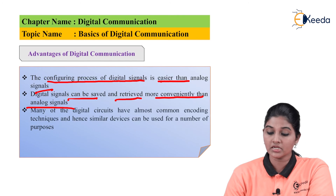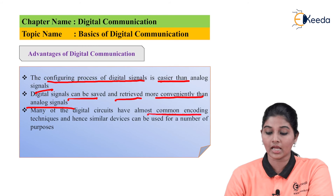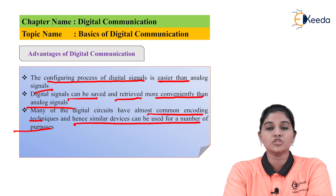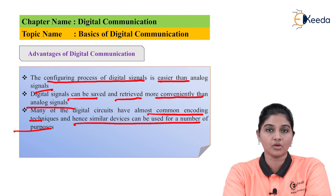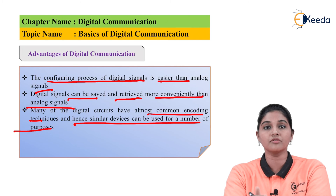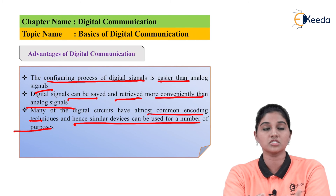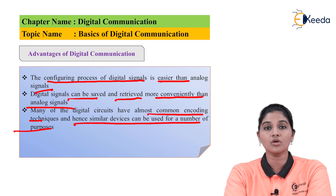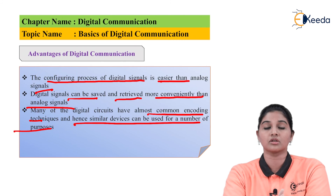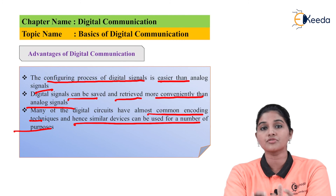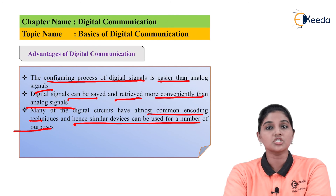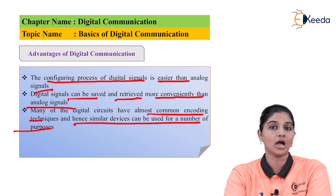Many digital circuits have almost common encoding techniques, and similar devices can be used to perform a number of operations. In contrast, for analog signal transmission, different circuits are required. For example, different types of receivers are required for receiving different types of analog signals. This is not the case with digital signals, because encoding and decoding of digital signals mostly uses similar circuits. Therefore, flexibility in circuit and hardware implementation is a key advantage of digital communication systems.